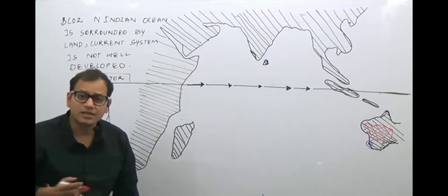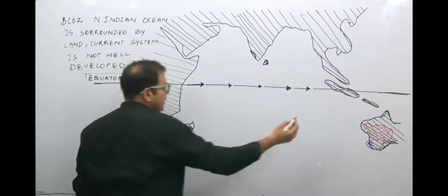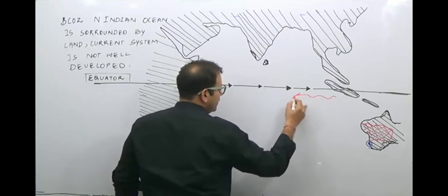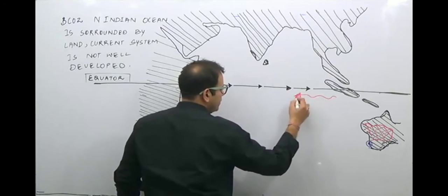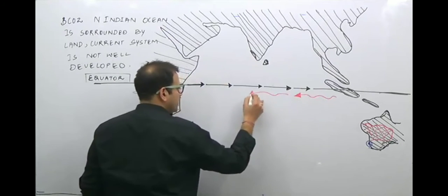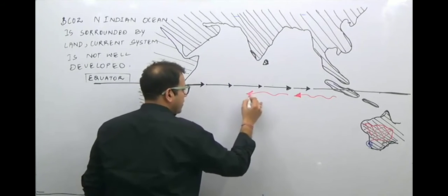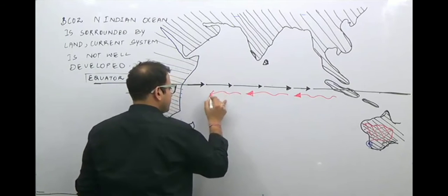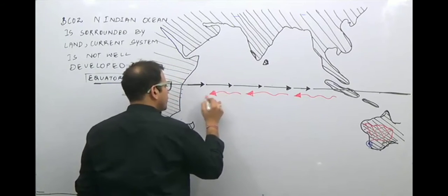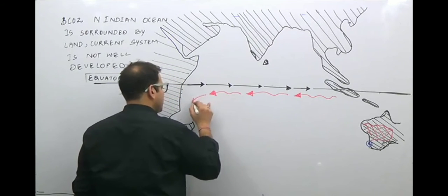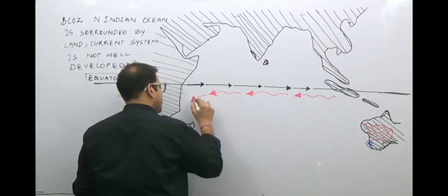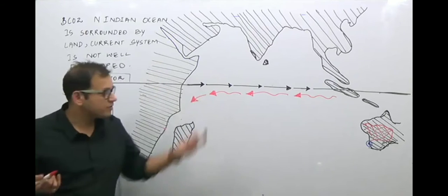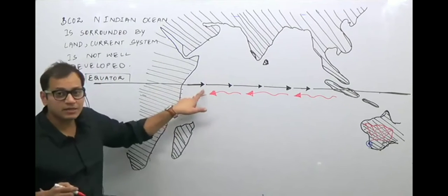Let us study the currents of the Southern Indian Ocean. In the Southern Indian Ocean, there is a South Equatorial Current, which is a properly well-developed current system. The South Equatorial Current is generated due to the rotation of the earth and due to the winds. There is also an Equatorial Counter Current.